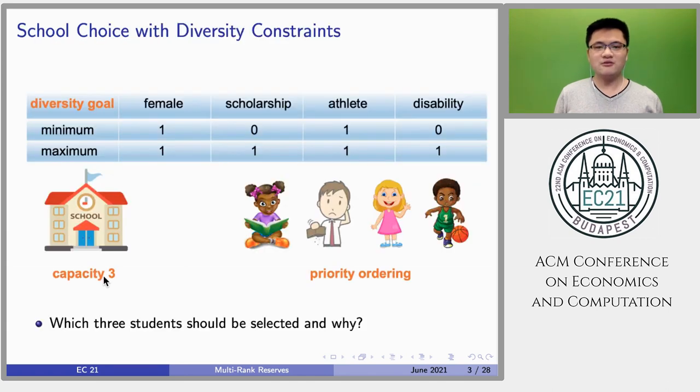Let's consider this example. Suppose there are four applicants and one school. As shown in the figure, the school has a capacity of three and a priority ordering over students. Without diversity constraints, the school can just choose the top three students by its priority ordering.